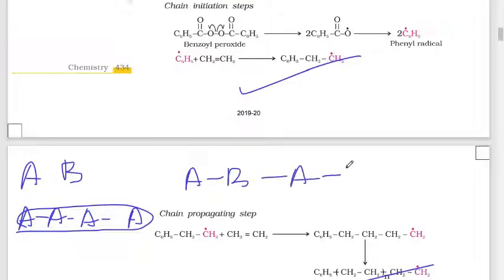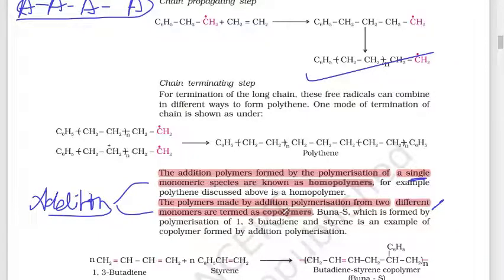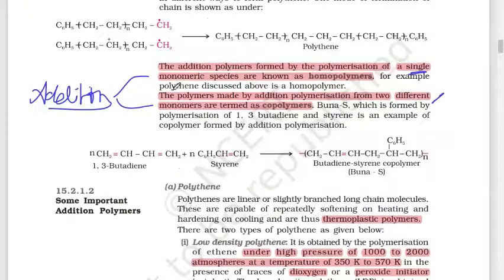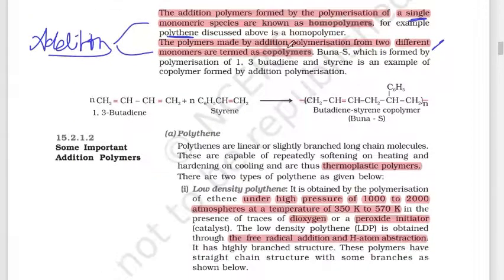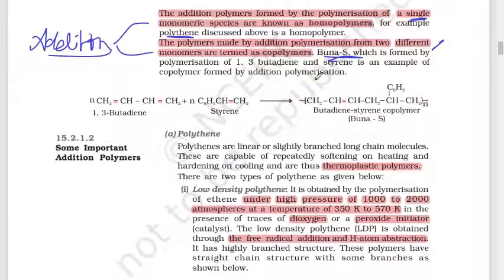Polymers formed by the polymerization of a single monomeric species are known as homopolymers. Polymers made from two different monomers are known as copolymers. An example of a homopolymer is polythene, and an example of a copolymer is Buna-S.